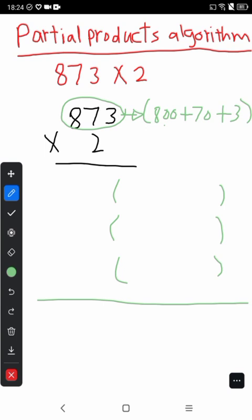We have 800 plus 70 plus 3. We write three brackets. First bracket, we will multiply 800 times 2. Second bracket, 70 times 2. Third bracket, 3 times 2.